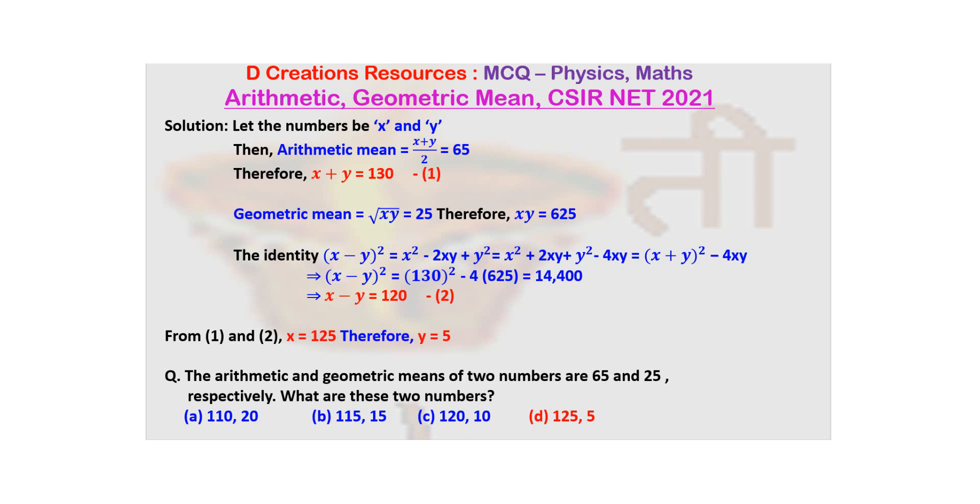You can see sum and product, and that will remind you of the identity. (X - Y)² = X² - 2XY + Y². You can rewrite it as X² + 2XY + Y² - 4XY. Now X² + 2XY + Y² is basically the square of the sum, that is (X + Y)² - 4XY. We have written it in this manner because we already have the information about X + Y and XY.